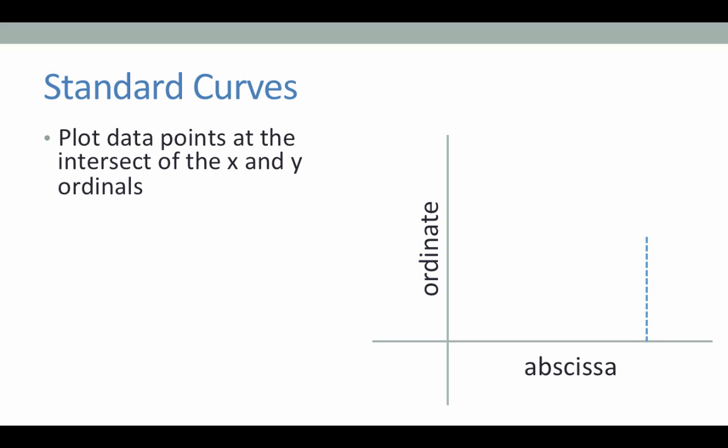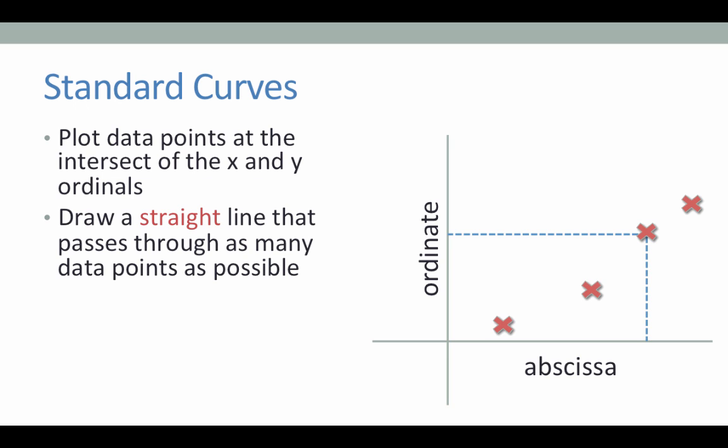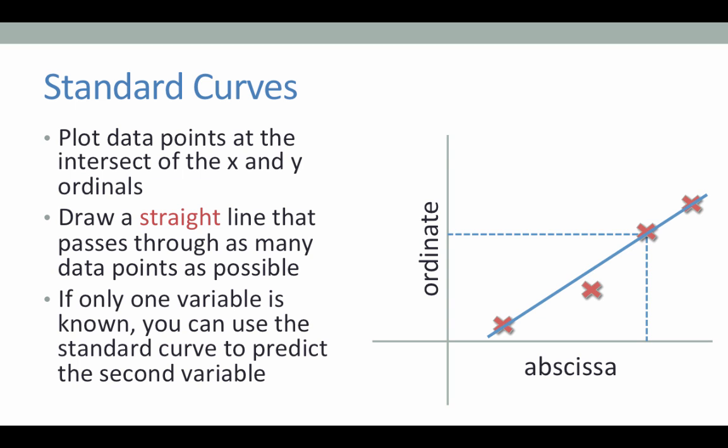By plotting the data points at the x and y ordinals, we can see a trend appear between the different data points. We then draw a straight line through the data points so that it touches as many points as possible to reveal the trend. This way, if we have one variable that is known, we can use our standard curve to predict the second variable.